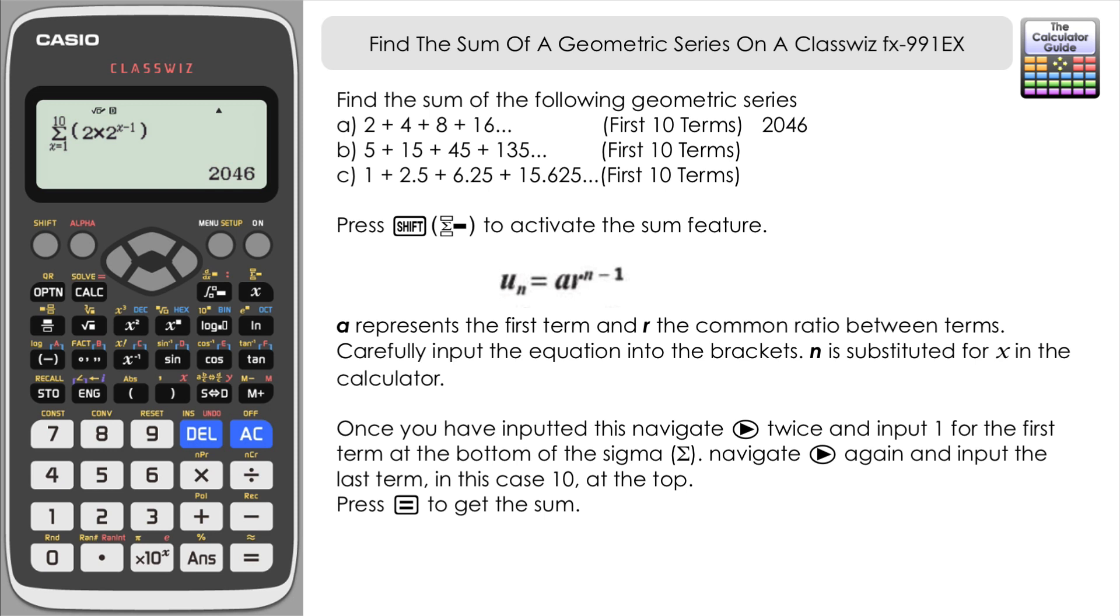Let's have a go at that again. Looking at the second geometric series. We've got 5 to 15, 45 and 135. So our A in this case is going to be 5 our first term. And our common ratio R is going to be 3.